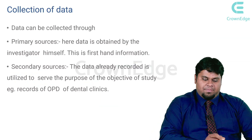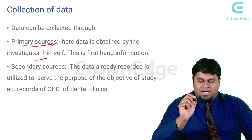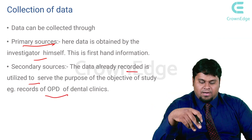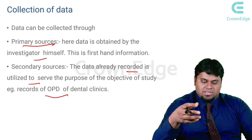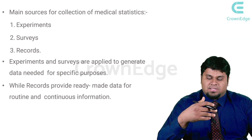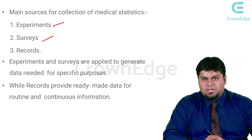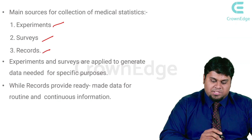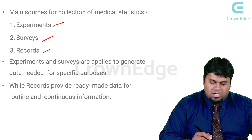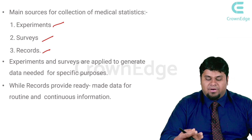Data collection can be done from primary resources, where data is obtained by the investigator himself — this is first-hand information. Secondary resources are already recorded data, such as OPD records from dental clinics. The various methods of data collection in medical statistics are: by means of experiments, by conducting surveys, and by collecting records. Experiments and surveys generate data for specific purposes, while records provide ready-made data for routine and continuous information.